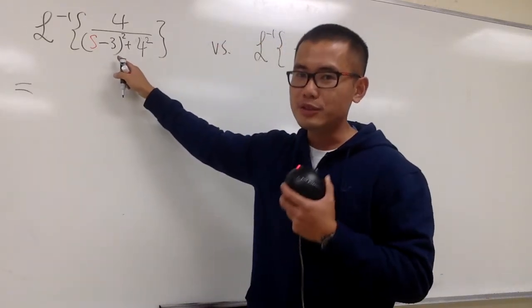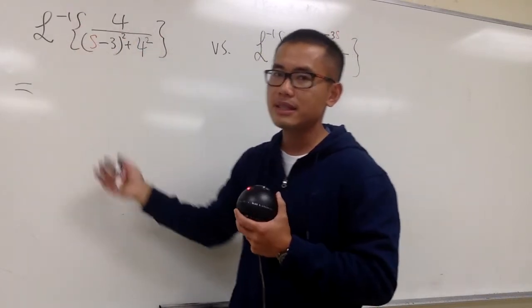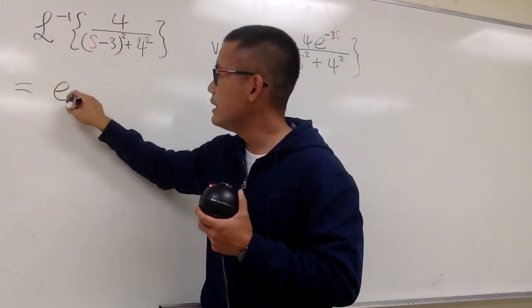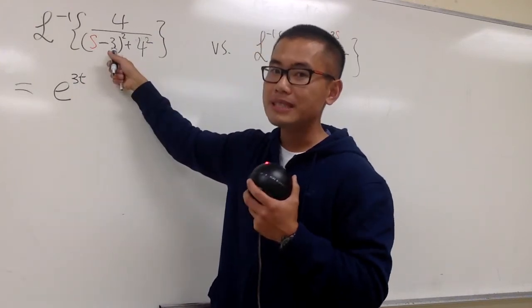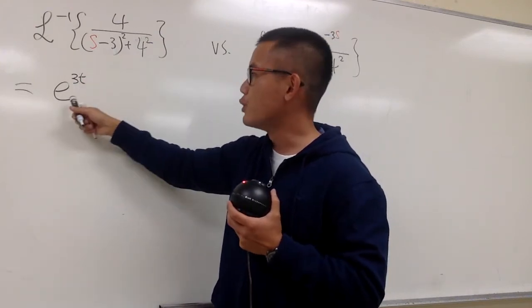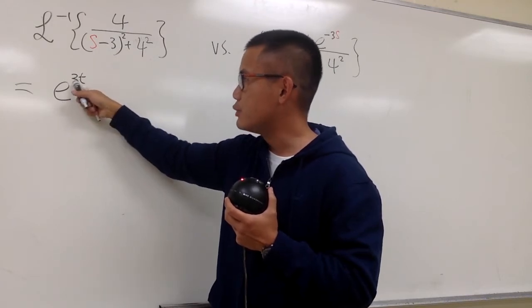Whenever you have the translation in the s world, and you are doing the inverse Laplace, you have to get e to the 3t, whatever this number is. We are subtracting by 3, so you multiply by e to the positive 3t, right?